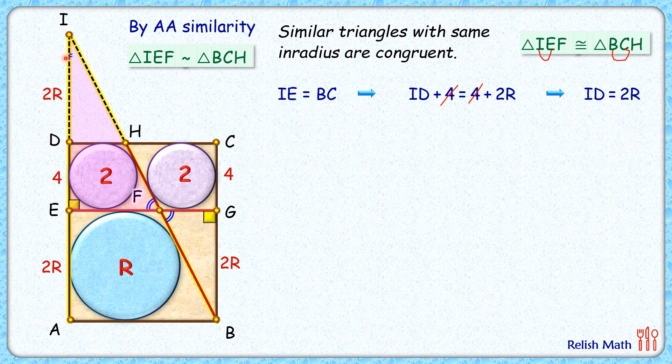Now let's mark this angle I here. If we look at this big right angle triangle IAB and this pink triangle IEF, they have got angle I common and both are right angle triangles. So we can say triangle IAB and this pink triangle are similar to each other by angle-angle similarity.